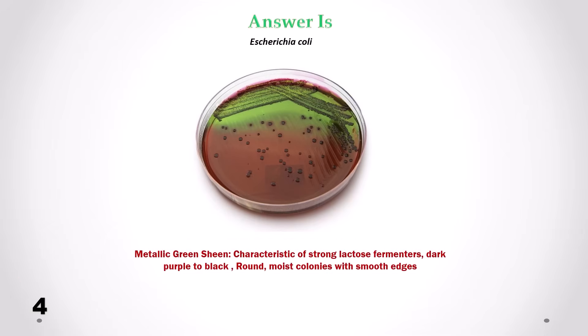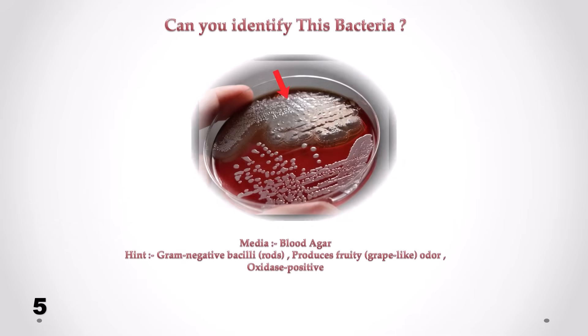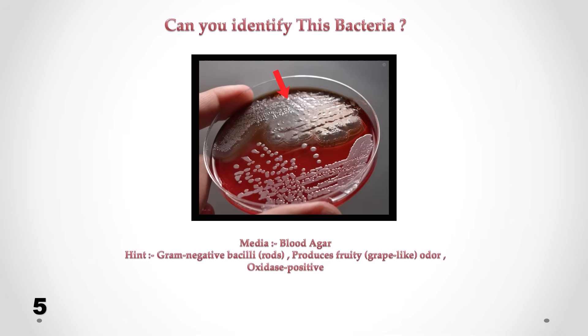Can you identify this bacteria? Correct answer is Escherichia coli. We can see the characteristic metallic green sheen, round moist colonies with smooth edges. Colony color is dark purple to black.